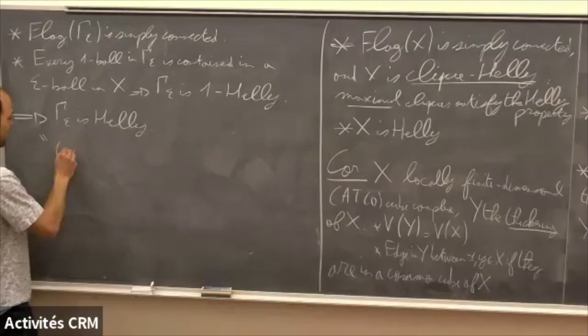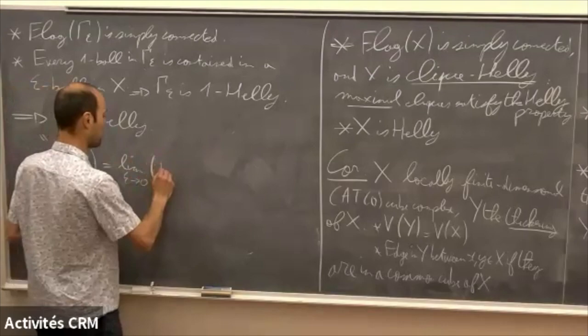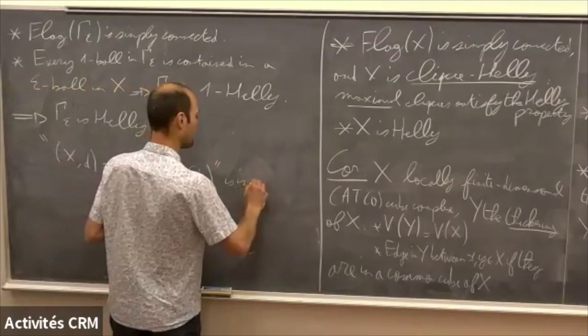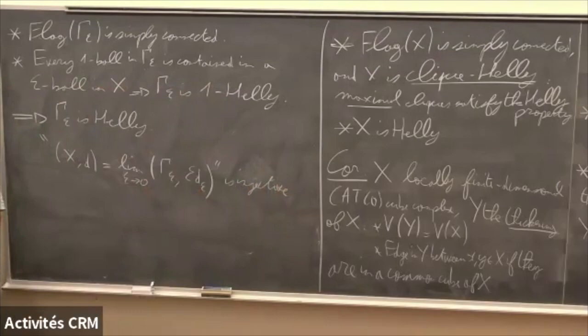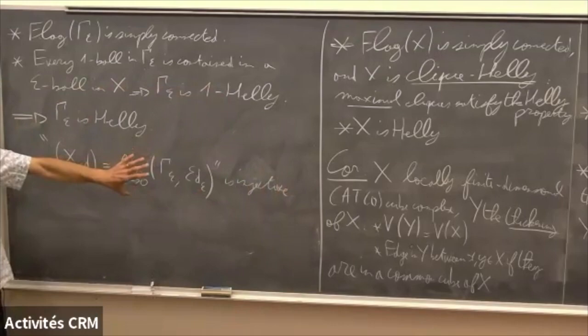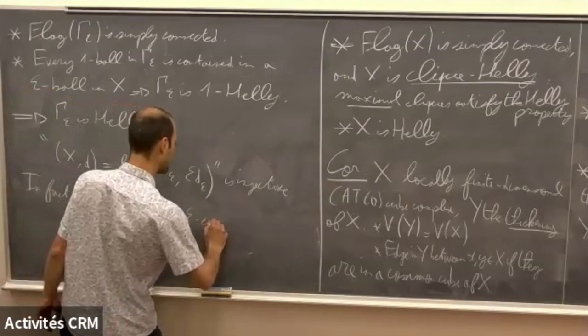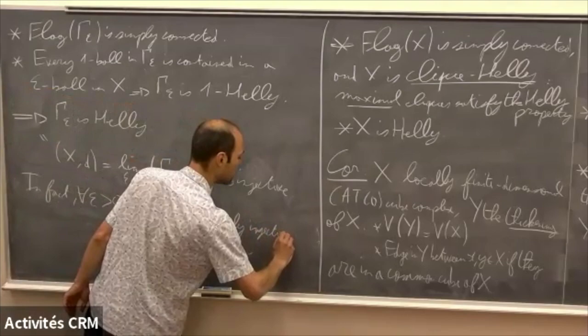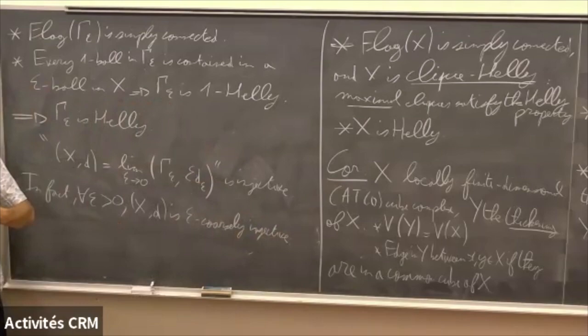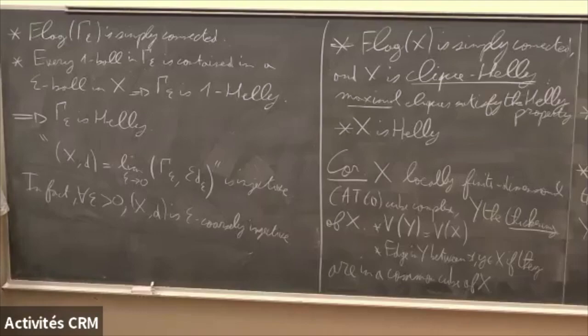Now what you want to do is take the limit as epsilon goes to zero. X itself is equal to the limit as epsilon goes to zero of this graph with the rescaled metric. This is roughly the idea, but one problem is that we don't know that limits of injective metric spaces are injective in general — we need some properness assumptions. In fact, for every epsilon positive, X is epsilon coarsely injective. We prove that it's injective up to some additive error which is arbitrarily small, and using completeness we can prove that it's actually injective.